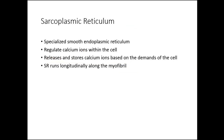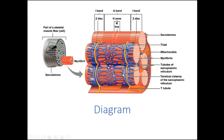Another organelle unique to skeletal muscle fibers is the sarcoplasmic reticulum — a specialized smooth ER. What's really important about it is that it stores calcium ions and releases them when the cell needs to contract. Calcium ions are absolutely necessary for contraction to happen. These sarcoplasmic reticulums run longitudinally with the myofibril, and the blue structure covering and running along the length of the myofibril in the diagram represents the sarcoplasmic reticulum.